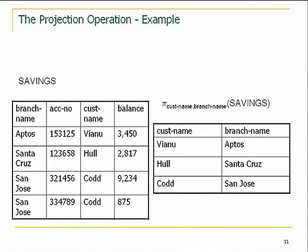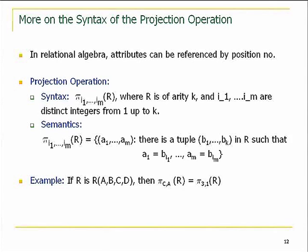Projection is the operation by which you suppress or hide some of the columns in your table. For instance, if we have a table with banking account information and we want to suppress the account number and balance and only keep the customer name and branch name, that's what projection does. Formally, the syntax uses pi with indices i1 through im, where i1...im are distinct integers from 1 up to k. The semantics gives you back the set of all m-tuples such that there is a completion to a k-tuple in the original relation, also allowing rearrangement of columns.